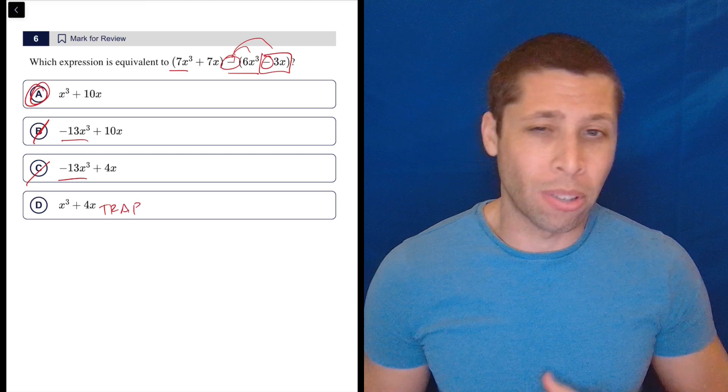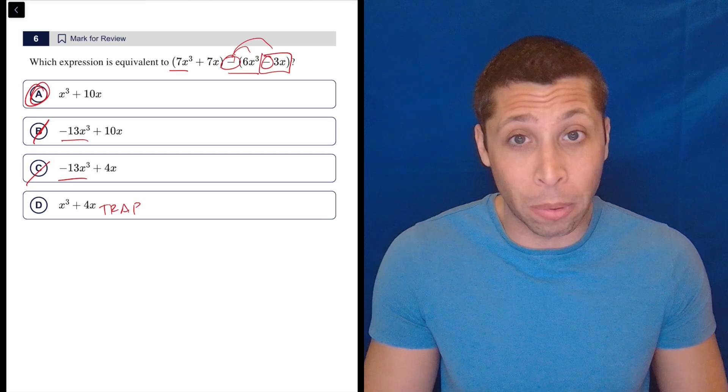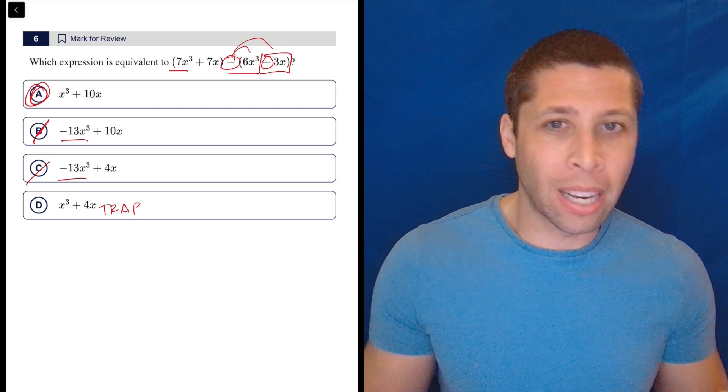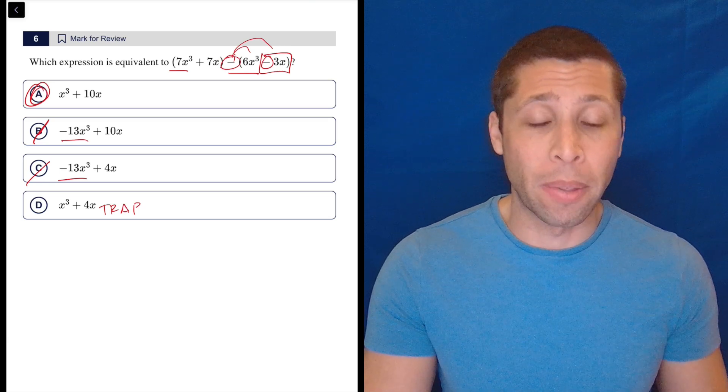But like I said, if we wanted, we could throw this in Desmos and compare the shapes of the graphs, or we could arithmetize. There's all sorts of things you could do if you really are terrible at algebra or really don't trust yourself. But combining like terms, distributing negatives, it's kind of basic stuff. So you really don't want to be going down those alternative paths for something this simple.